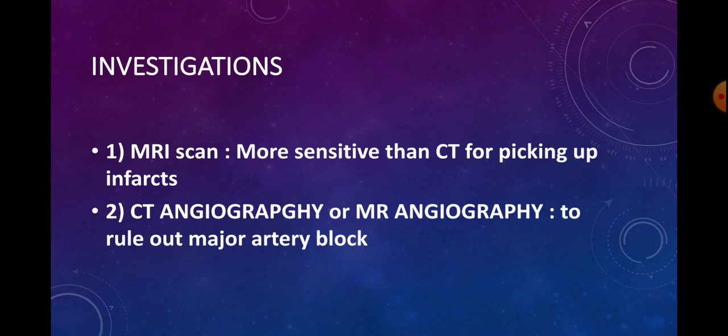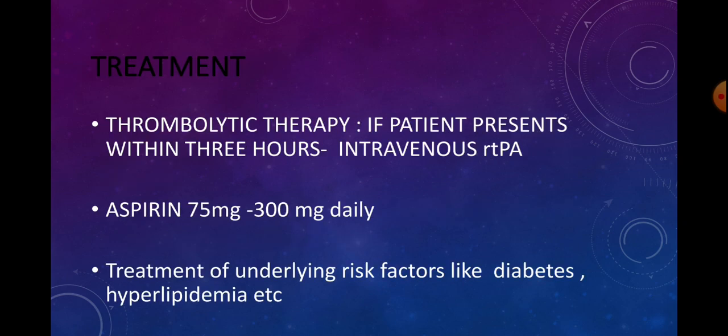CT angiography or MR angiography can also be done to know the exact site of the block. For treatment, thrombolytic therapy is used: if the patient reports within three hours of the lacunar stroke, give intravenous recombinant tissue plasminogen activator. Anti-thrombotic treatment with aspirin 75 mg to 300 mg daily is also given to prevent extension of the infarct and recurrence.